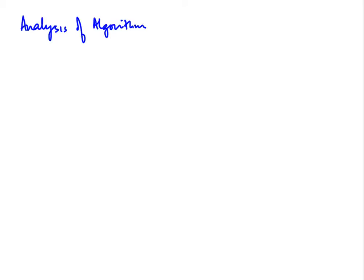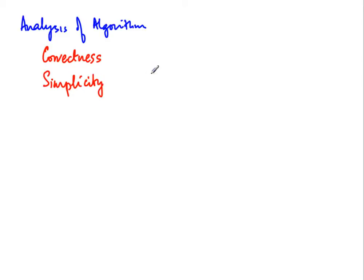Let us talk about the analysis of algorithms. The analysis of algorithms measures various parameters about how an algorithm works. One parameter which we cannot sacrifice is correctness — we assume that any algorithm we design will always compute the answer expected of it. Another desirable property might be simplicity: how easy is it to understand an algorithm? This varies by person and is hard to quantify, so analysis of algorithms typically focuses on something that can be quantified, which we call efficiency.